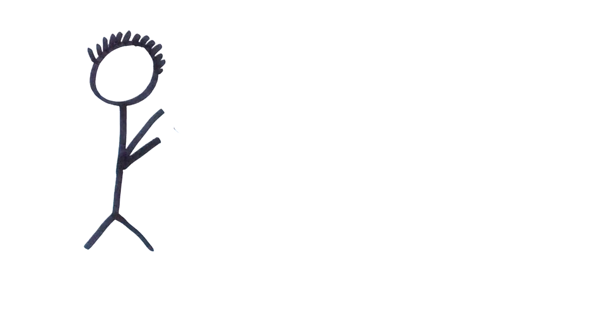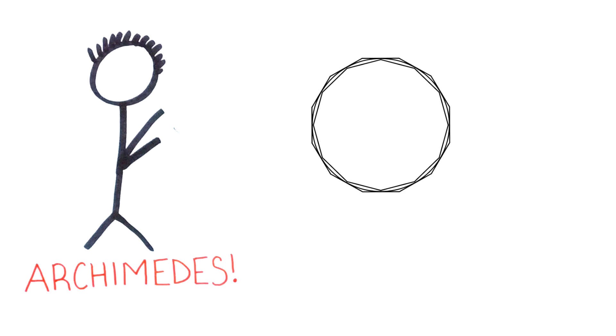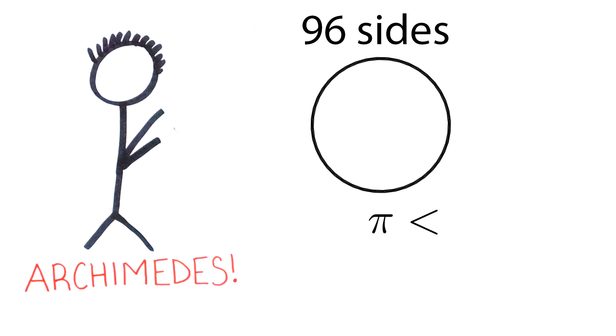You can get a better approximation by adding more and more sides to your circumscribed and inscribed polygons and working out their perimeters. Archimedes went as far as a 96-sided polygon and got the approximation of pi to be less than 3 and 1 seventh but greater than 3 and 1 seventh.